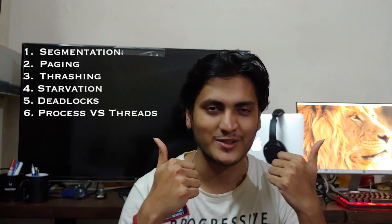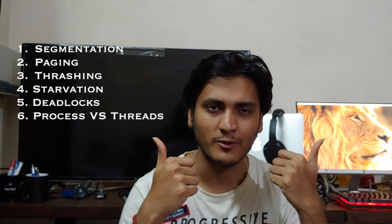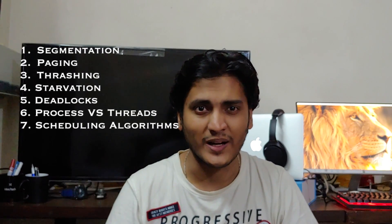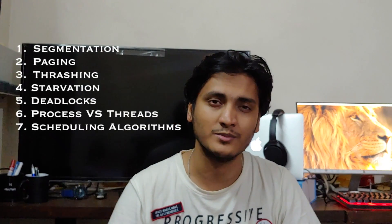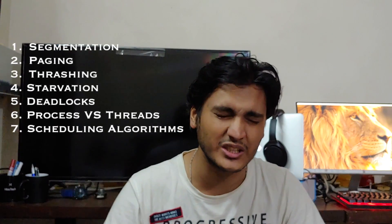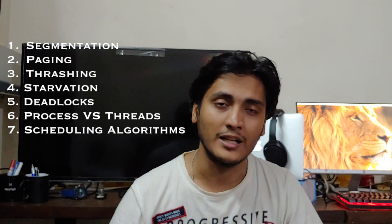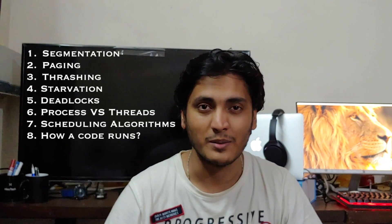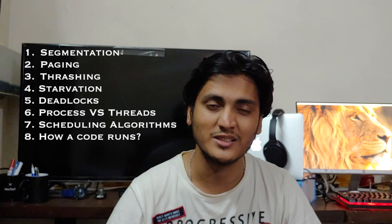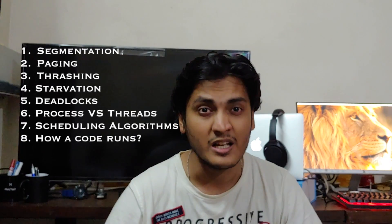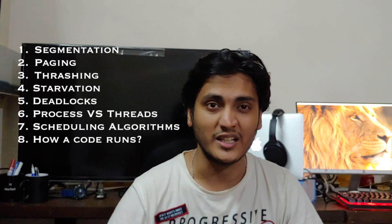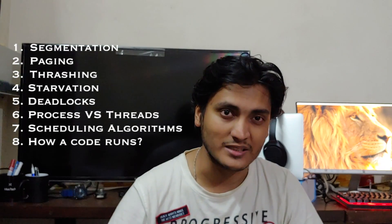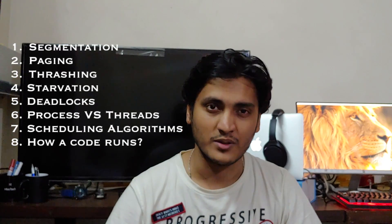6. Everything about processes and threads is very important — the difference between the two and the makeup of both. 7. How a process or a thread is scheduled — process scheduling algorithms and thread scheduling algorithms are extremely important. 8. How a program is executed, how memory management is done when the program is getting executed, where the variables are getting created, where dynamic variables and static variables are getting created, who assigns spaces, and who destroys spaces.